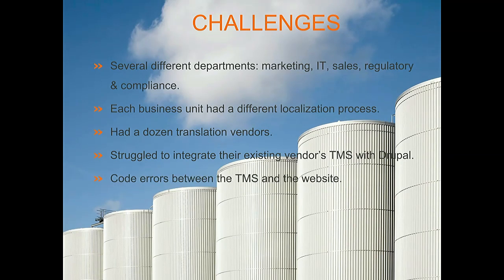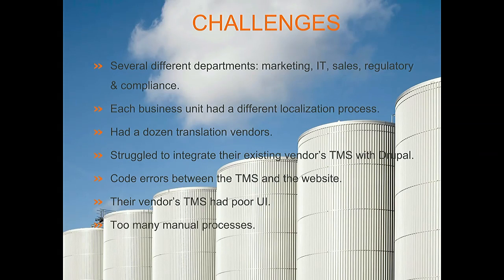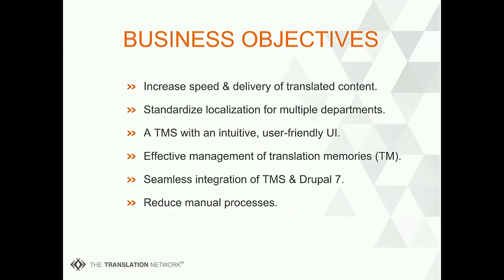You also have code errors when you're pushing stuff back and forth, and some vendors have poor UI support. There are still too many manual processes. The business objectives for Varian were to increase the speed and delivery of their translated content, standardize across all of their departments under one umbrella, and have a translation management system that was easy to use with a nice UI. Processes are difficult to do, so how do you make those things easier?